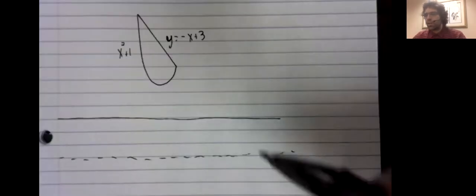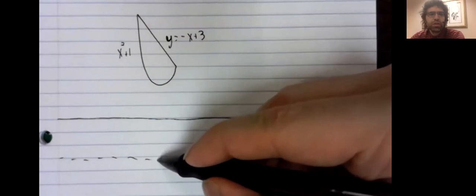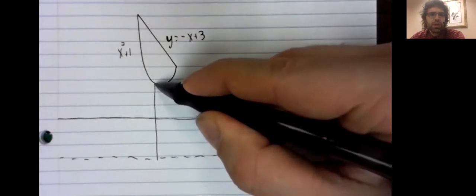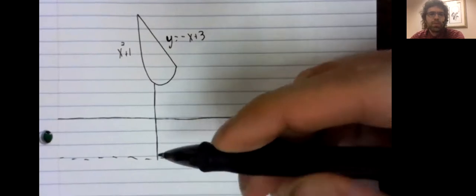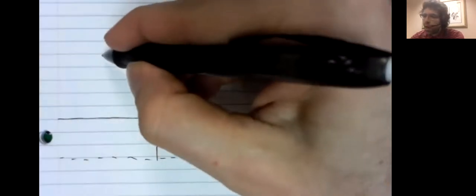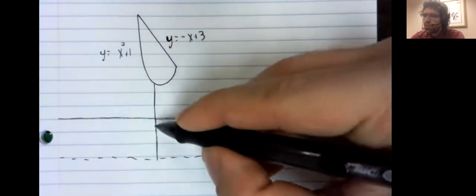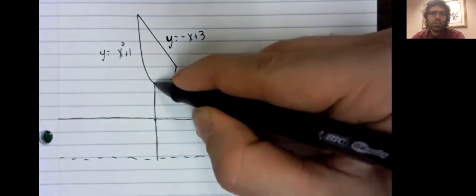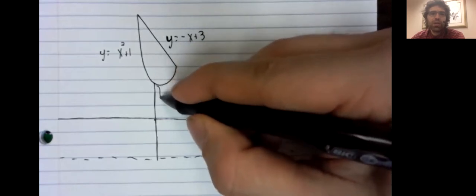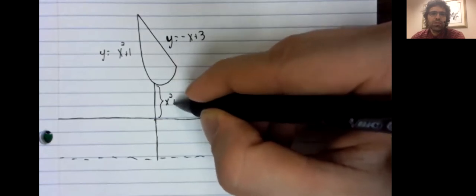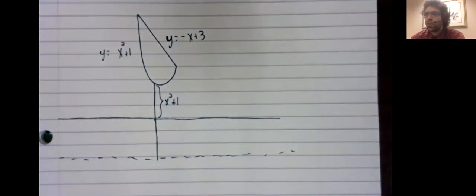Starting from the axis of revolution, we draw a line up until we reach the region. The distance from y equals zero to y equals x squared plus one units.